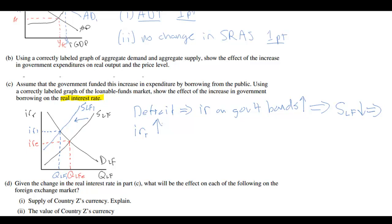We have answered this question completely. This is most likely a three-point question — two points for the graph being labeled and drawn correctly, and one point for showing the correct change in the interest rate. There is another way to illustrate the crowding out effect, which is by drawing an increase in the demand for loanable funds, but that has been explained in an earlier video lecture.